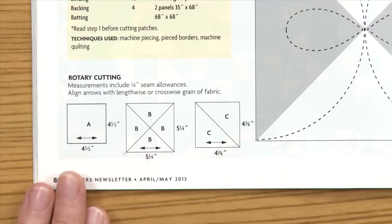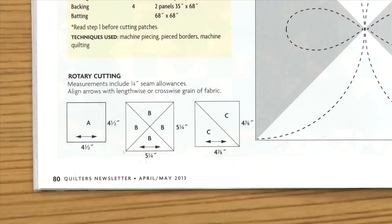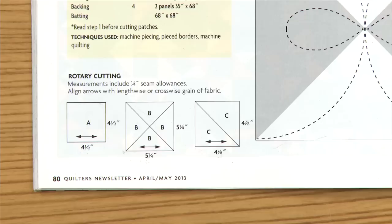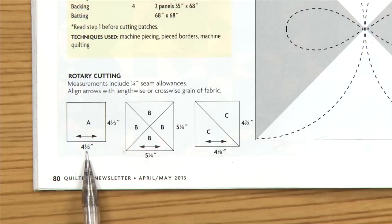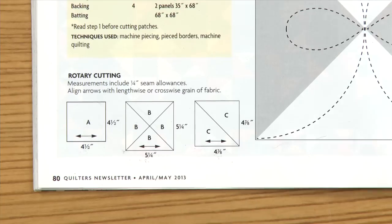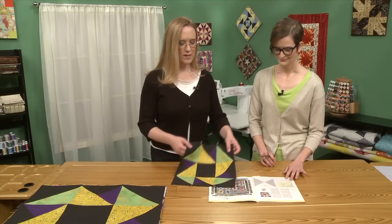What I did is I simply multiplied all of my finished sizes by two to get eight, and then I add my seam allowance back on — and then I have my new patch sizes. So for the A it will be eight and a half, for the B it will be nine and a quarter, and for the C it will be eight and seven-eighths. Let's see what that looks like.